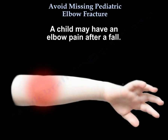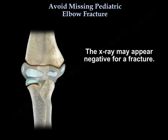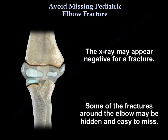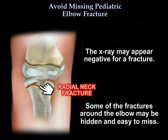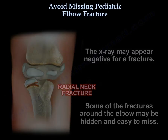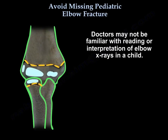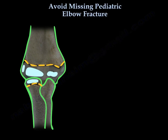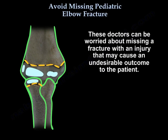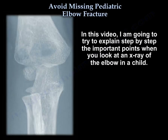A child may have elbow pain after a fall, and the x-ray may appear negative for a fracture. Some of the fractures around the elbow can be hidden and easy to miss. Doctors may not be familiar with reading or interpreting elbow x-rays in a child, and they can be worried about missing a fracture that may cause an undesirable outcome. In this video, I'm going to explain step by step the important points when you look at an x-ray of the elbow in a child.